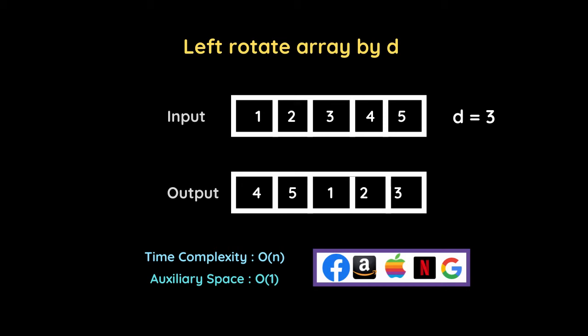The first d elements are moved to the end of the array and the remaining elements are moved to the beginning. So in this example, one two three four five were the elements — one two three have been moved to the end and four and five have been moved to the beginning of the array.